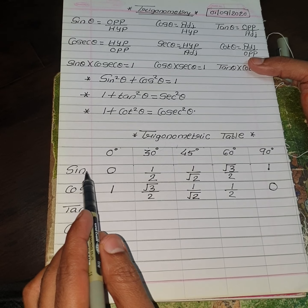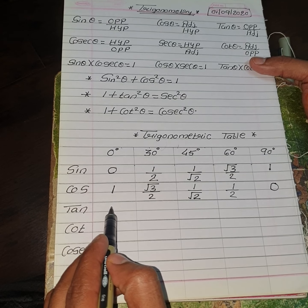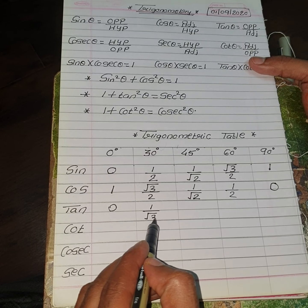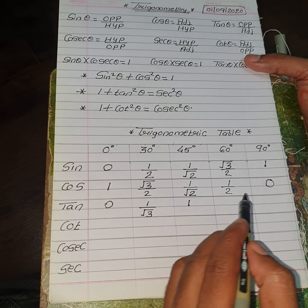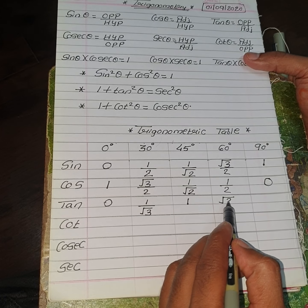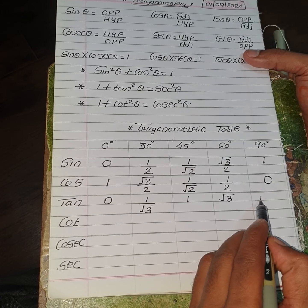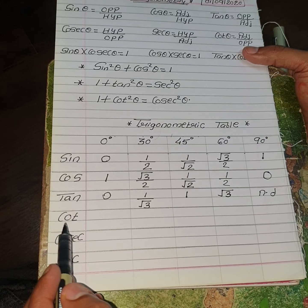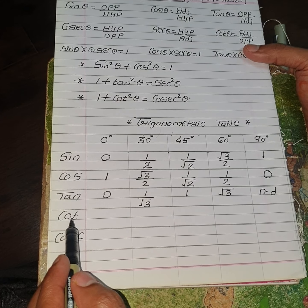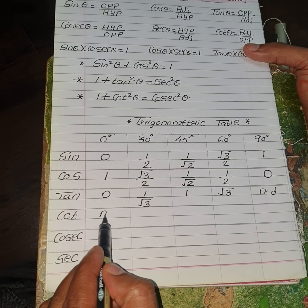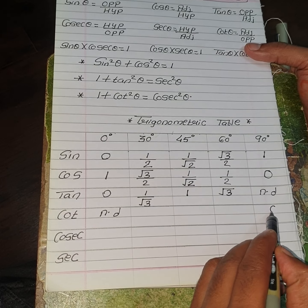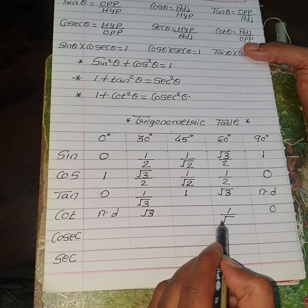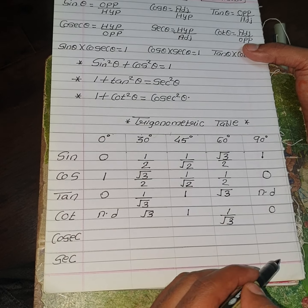Tan is Sin divided by Cos. So Tan 0 is 0 upon 1, which is 0. Tan 30: the 2s cancel, giving 1 upon root 3. Tan 45: 1 upon root 2 divided by 1 upon root 2 is 1. Tan 60: the 2s cancel, giving root 3 upon 1, which is root 3. Tan 90 is 1 upon 0, which is not defined. For Cot, just change the position similarly: not defined, root 3, 1, 1 upon root 3, and 0.